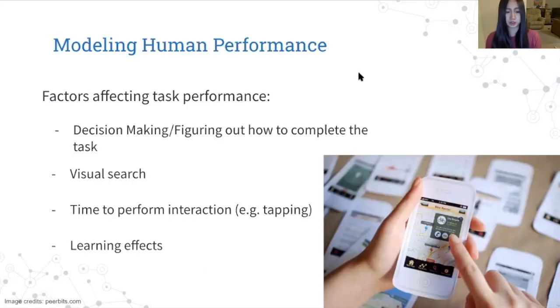First, some background on modeling human performance. There are many factors that affect human task performance, which is a metric we defined that aims to capture how quickly and accurately users complete the tasks. The factors include the time it takes to decide or figure out how to complete the task, visual search, which is the time it takes to find the target element, like the button to be tapped, and then the time it takes to perform the actual interaction, like the time it takes to tap on a button, and finally learning effects, where users take less time as they become more familiar with the interface and tasks. So all these features are captured in either our model's features or architecture.